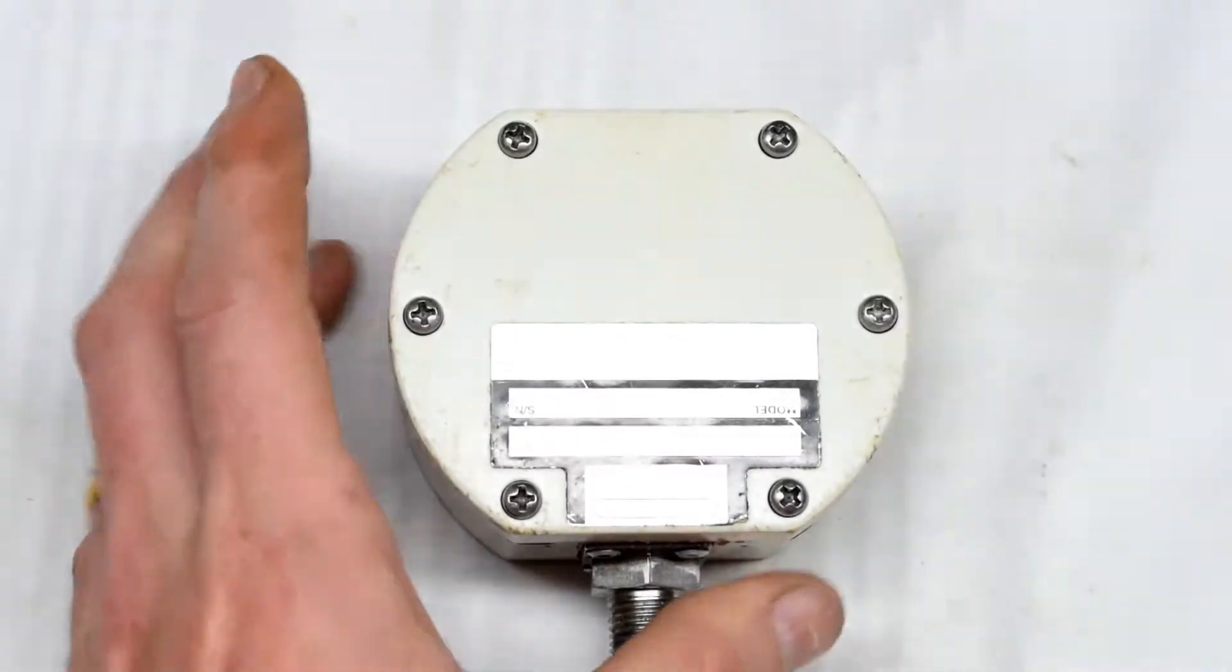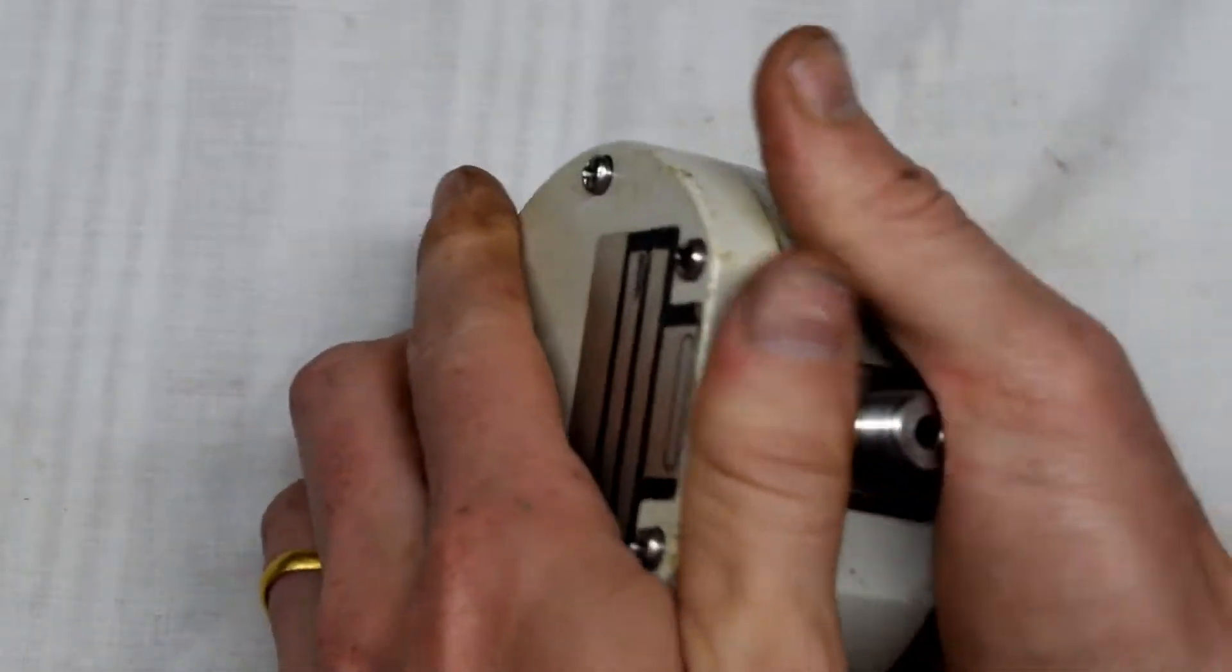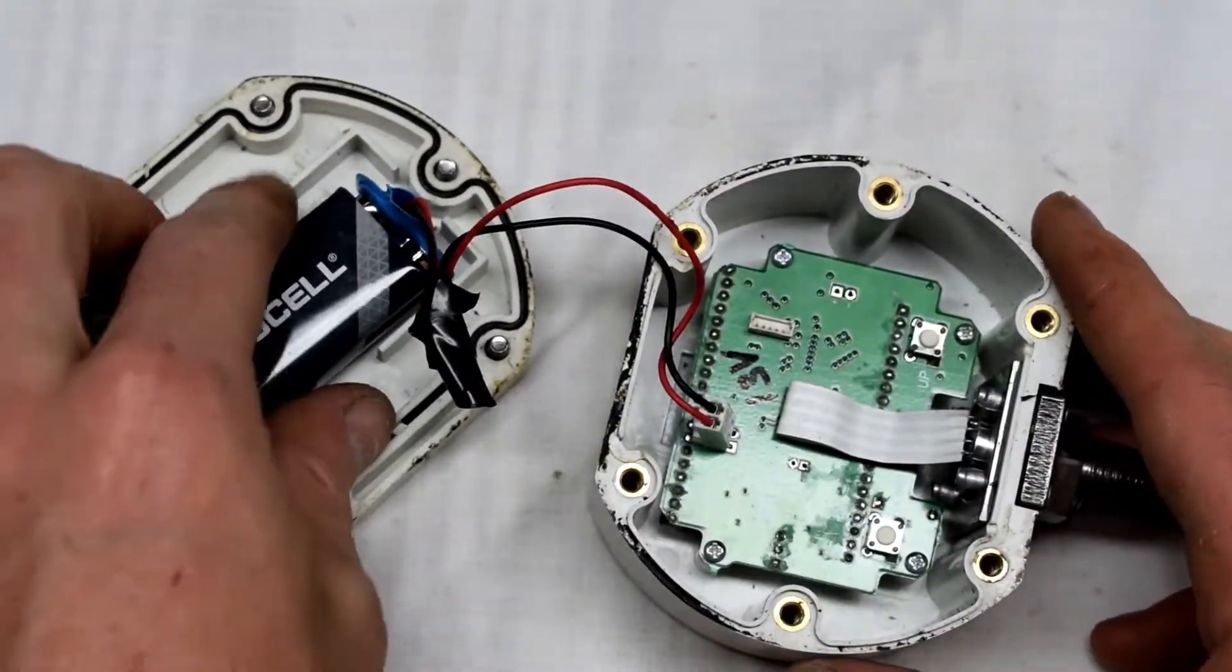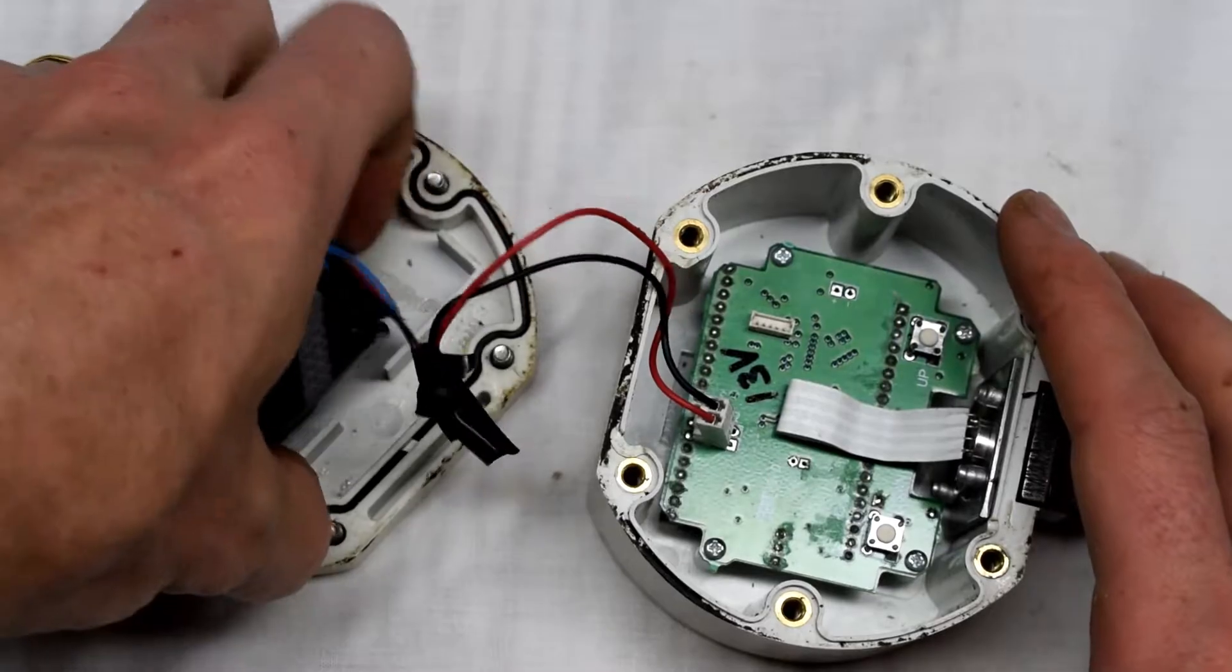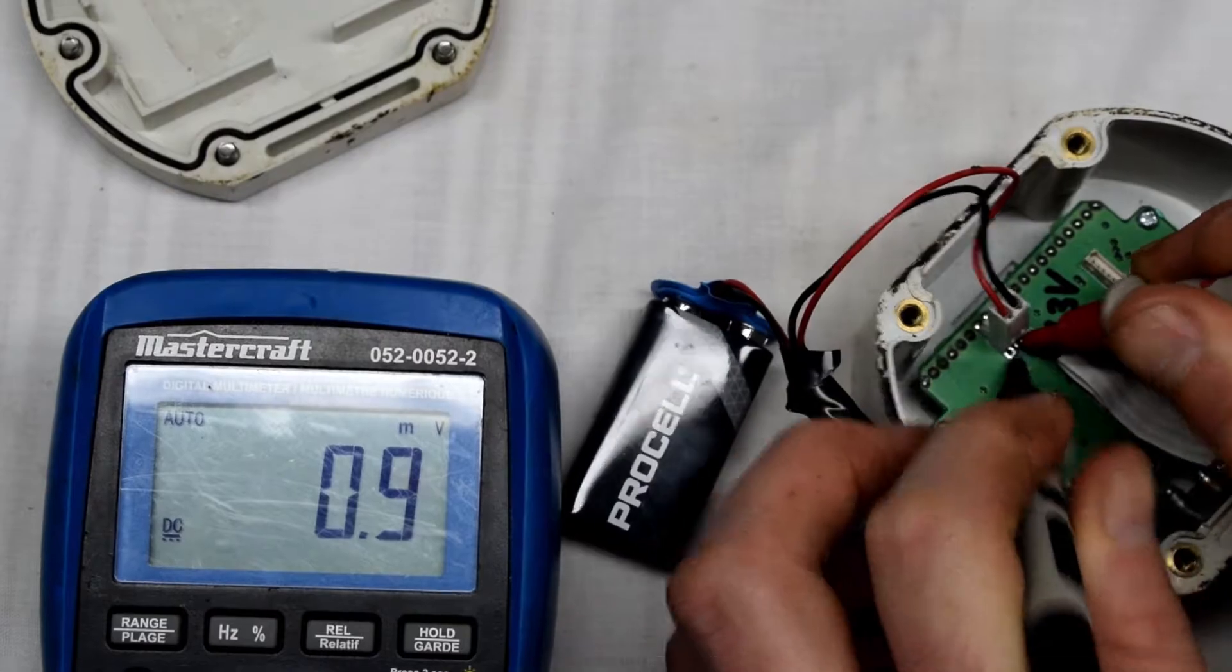I'm removing the case. The issue is it doesn't turn on, so I'm just pulling this off. It's powered by a 9-volt battery, so I'm measuring the voltage there.